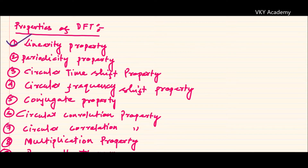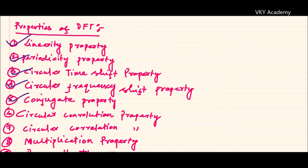The second property is the periodicity property, the third one is the circular time shift property, the fourth one is the circular frequency shift property, the fifth one is the conjugate property, and the sixth one is the circular convolution property.